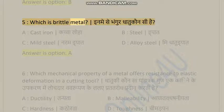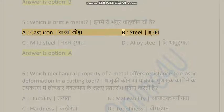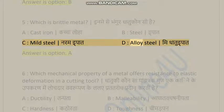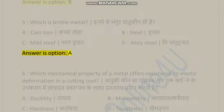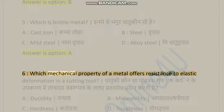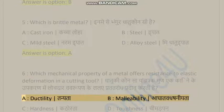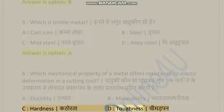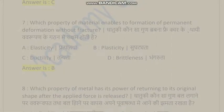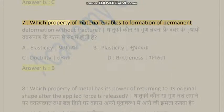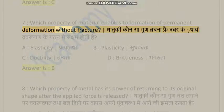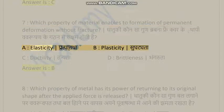Question 5: Which is a brittle metal? A) Cast iron, B) Steel, C) Mild steel, D) Alloy steel. Answer is option A. Question 6: Which mechanical property of a metal offers resistance to elastic deformation in a cutting tool? A) Ductility, B) Malleability, C) Hardness, D) Toughness. Answer is C.